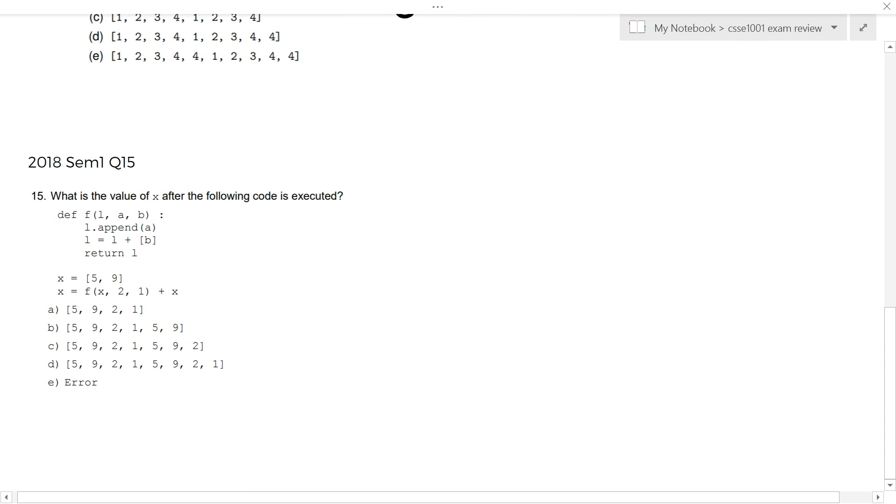Last one. 2018, semester 1, question 15. So, what is the value of x after the following code is executed? You get this function F. You get a list L. And you get two numbers A and B. You add A, you append A to L. And then you add B to L. And then you return that L. Pause the video. If I haven't already said that, attempt it. Okay. x equals 5 and 9. So, x equals left to right. So, let's have a look at this one. f, x, 2, 1. We enter the function F. And notice how it's not a copy of x. So, L actually points to the same list currently. And then A equals to 2. B equals to 1. So far, so good. L dot append A.